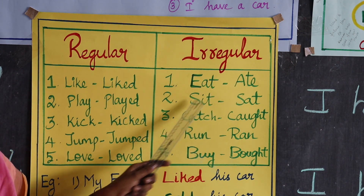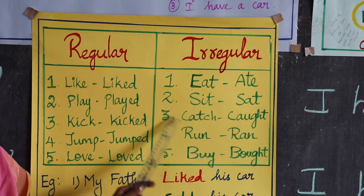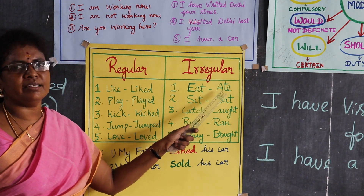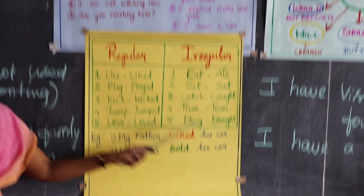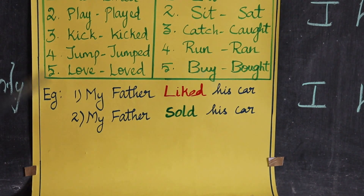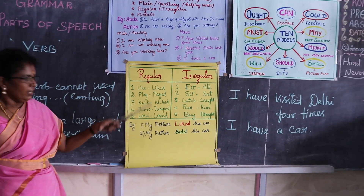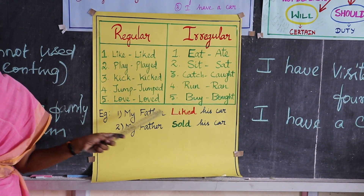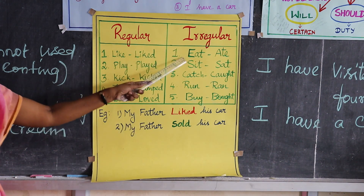Irregular verbs include eat, catch, run, buy. These change their spelling — for example, E-A-T changes to A-T-E. For example: 'My father liked this car' — the main verb is 'like,' ending in ED, indicating simple past tense — that is a regular verb. 'My father sold his car' — the main verb is 'sold,' not ending in ED, but still indicates simple past tense — that is an irregular verb.